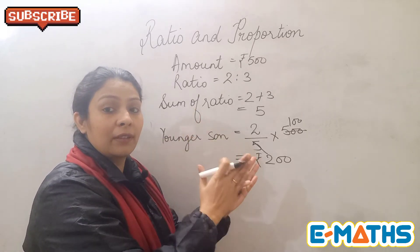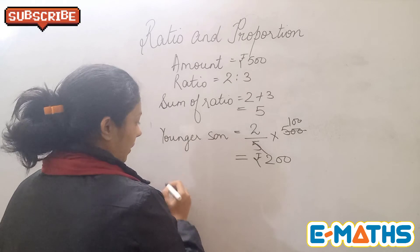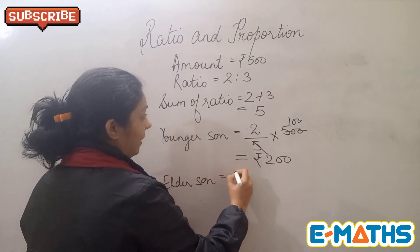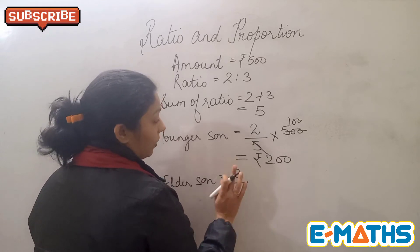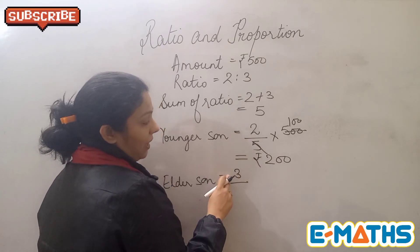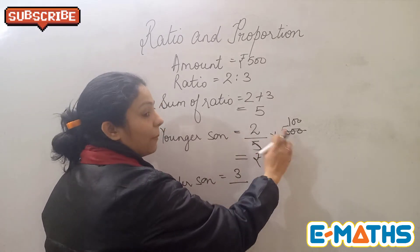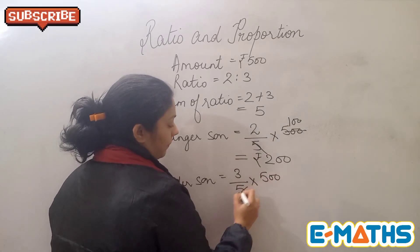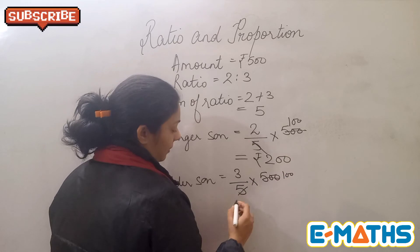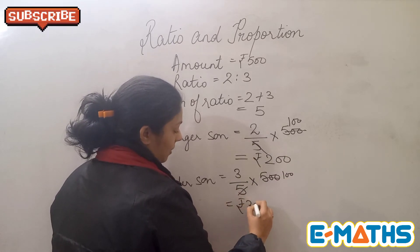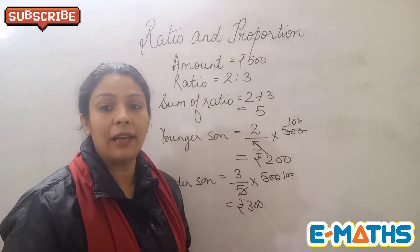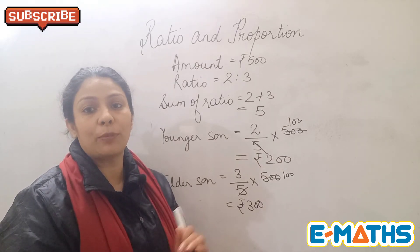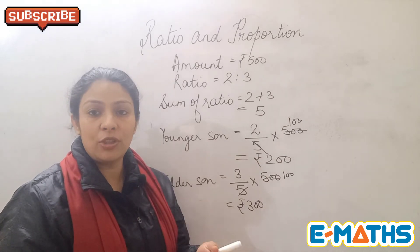Now the elder son will get the third part of it. So only the numerators are changing, the denominator and the amount will remain same for all the ratios that you are going to find. So again cancel it and you get the amount for the elder son also. That's how you can calculate if you have been given the ratio and the amount.